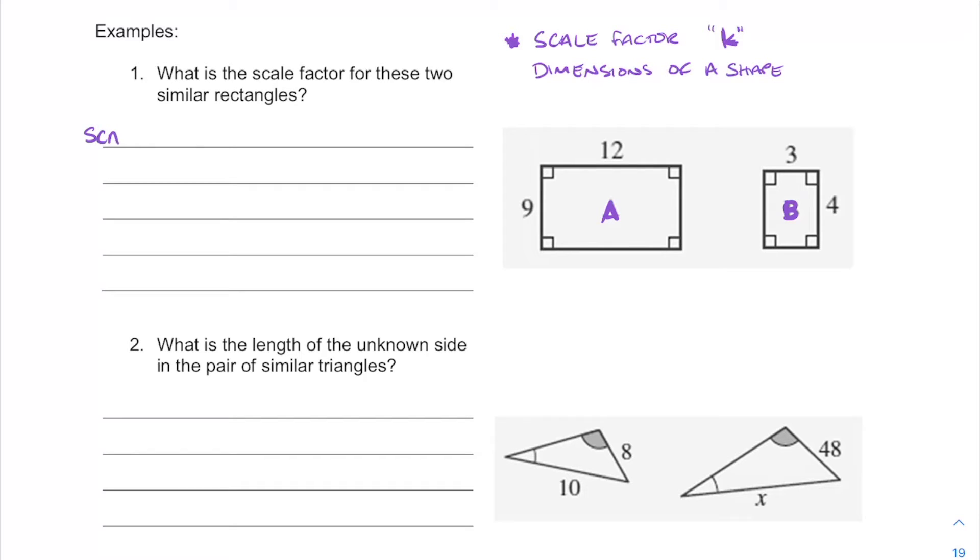So scale factor or K as we were saying before, is going to be shape 2 over shape 1 or shape B over shape A. That's going to keep us making sure that we've got the right factor going. So from this one we're going from a large to a small shape. We want to use a fraction or some way of making our numbers smaller rather than bigger.